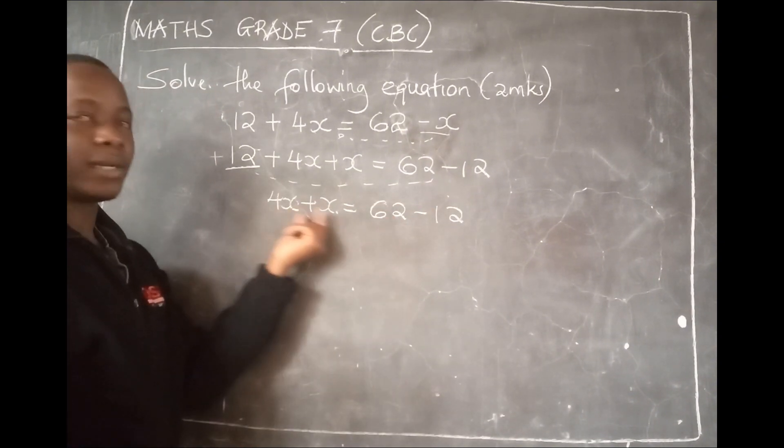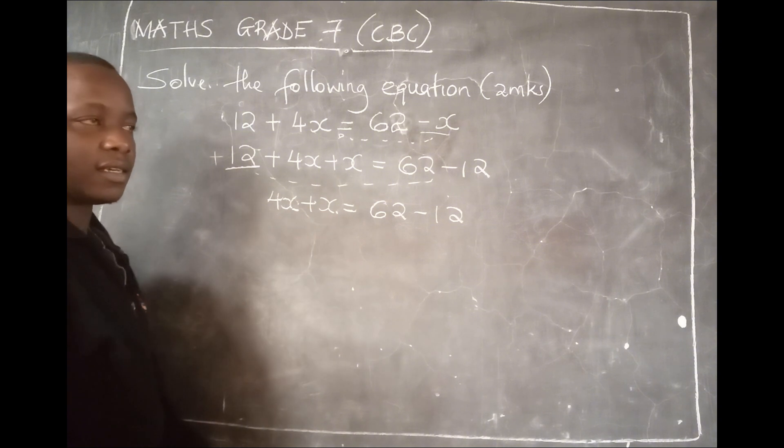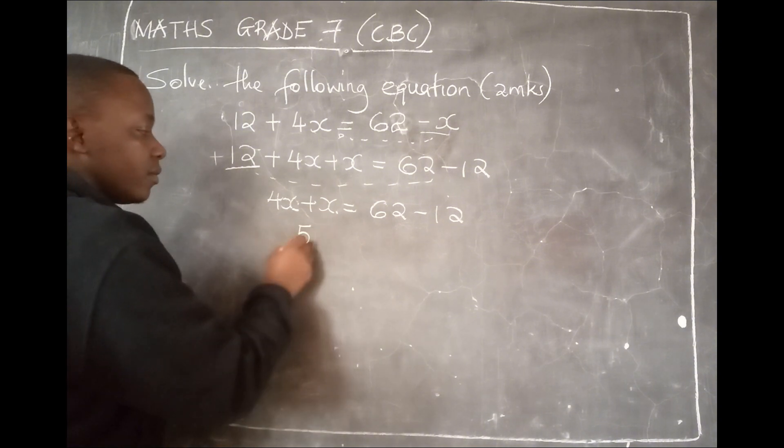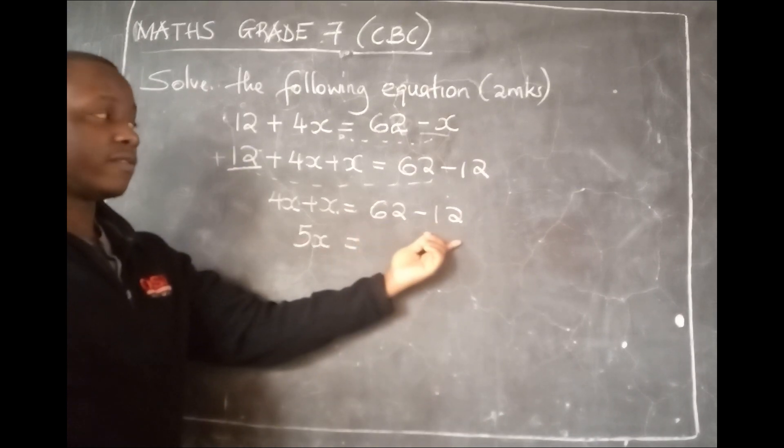Now, what is 4x plus x? This x is the same as 1x. So 4 plus 1 is 5. So 4x plus x is 5x. What is 62 minus 12? 62 minus 12 is 50.